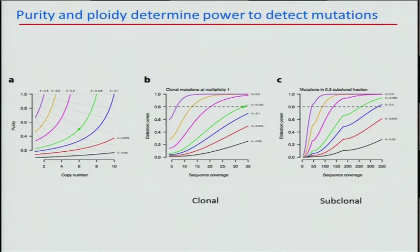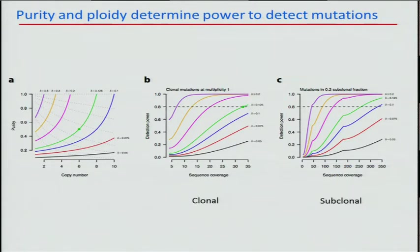That leads into my next point about how purity and ploidy affect sequencing experiments. There's a strong relationship between purity and copy number: the higher the local copy number, the deeper you need to sequence to detect a mutation at one copy per cell in that sample. Similarly, the lower the purity of the sample is, the deeper you need to sequence to adequately find mutations.